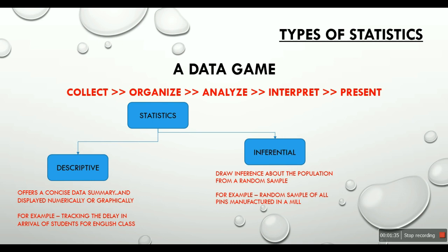And inferential statistics where we make inferences about the population from a random sample. For example, a random sample of all pins produced in a mill. Since it is not possible to measure all pins which could be in millions, we take a statistically valid sample to make inference about the population. And yes, we will come back to the statistically valid thing in our video on sampling. So let's not worry about it now.